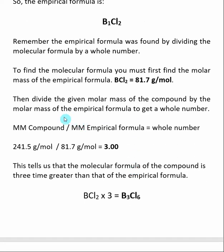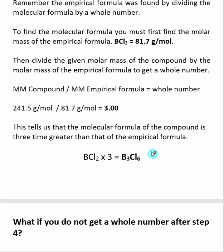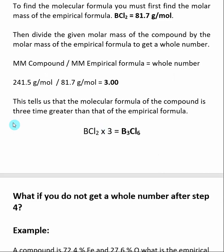We then find the ratio between the molar mass of our given compound — 245.1 grams per mole from the original question — and the molar mass of the empirical formula, 81.7 grams per mole. This gives us a whole number that tells us the relationship between the empirical and molecular formulas. The result is 3, meaning the molecular formula is three times greater than the empirical formula. Multiplying B1Cl2 by three gives the molecular formula B3Cl6.